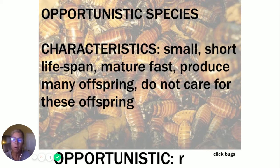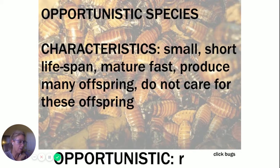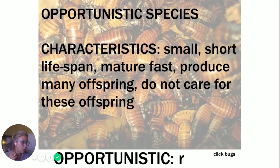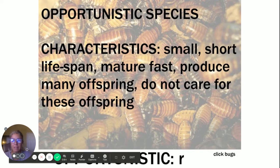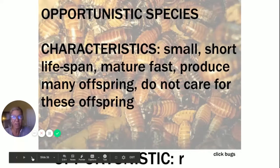On your notes — the link is in the video description — fill in the blanks and add supportive pictures. Opportunistic pattern: they maximize their rate of natural increase, tend to be colonizers, have a J-shaped growth curve, traits include small size, short lifespan, fast maturation and many offspring. They tend to be regulated by density independent factors — put a pin in that, I'll come back to it.